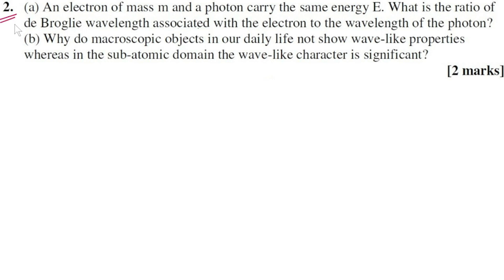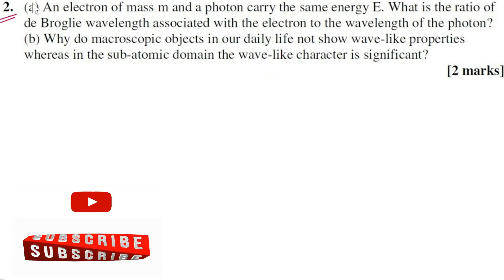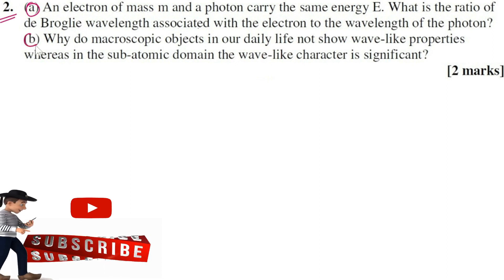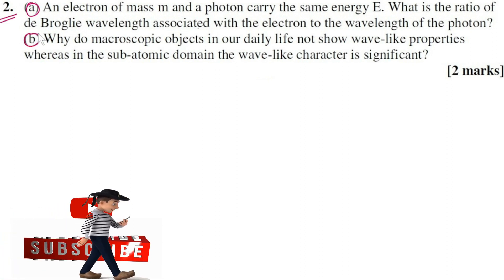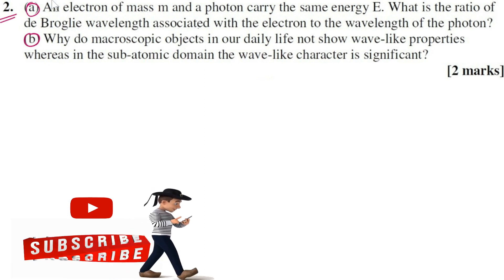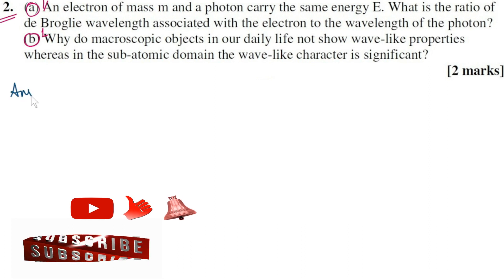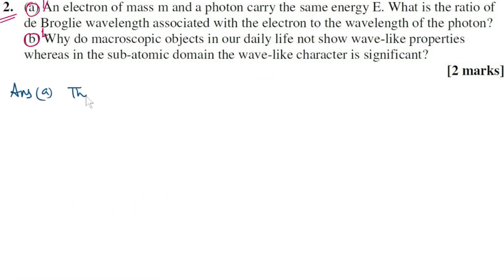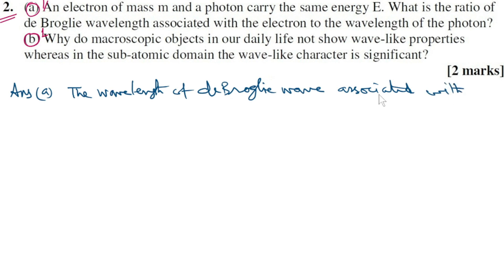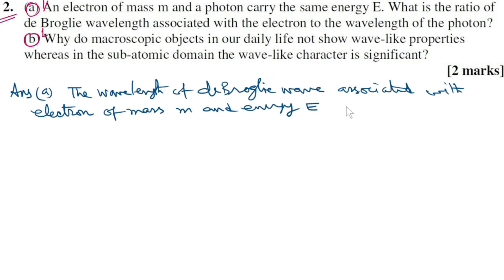Question number two has two parts with no sub-parts, and hence marks assigned should be one each. Part A: the wavelength of the de Broglie wave associated with an electron of mass m and energy e is to be found.